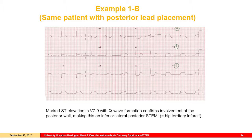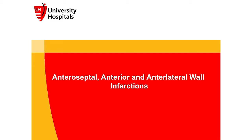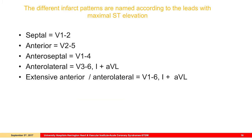For posterior lead placement, if you do V7, V8, V9, you see ST elevation there. Anterior wall infarction patterns: if it's septal, it's V1 and V2; anterior is V2 to V5; anteroseptal V1 to V4; anterolateral is V3–V6 plus 1 and AVL; if extensive you get everything. It's all in your handout.